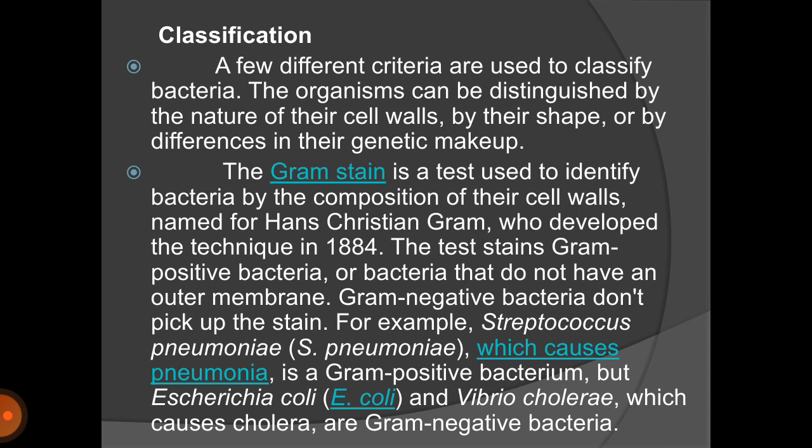There are two types of gram stain test: positive and negative. Gram-positive bacteria don't have an outer membrane — for example, Streptococcus pneumoniae, which causes pneumonia, is a type of gram-positive bacterium. On the other hand, gram-negative bacteria don't pick up the stain — for example, E. coli and Vibrio cholerae, which causes cholera, are examples of gram-negative bacteria.